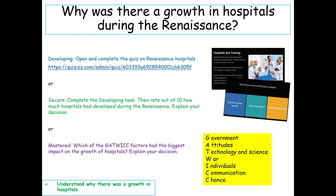For our second learning objective we need to understand why there was a growth in hospitals during the Renaissance. Developing students, open and complete the quiz on Renaissance hospitals. Secure students, complete the developing task first and then rate out of ten how much hospitals have developed during the Renaissance — explain your decision. Mastered students, which of the Gatwick factors had the biggest impact on the growth of hospitals? Explain your decision.